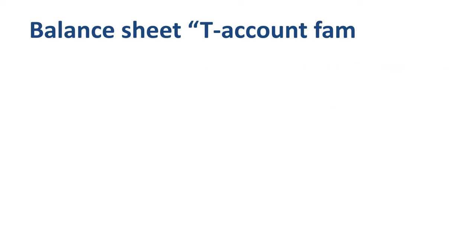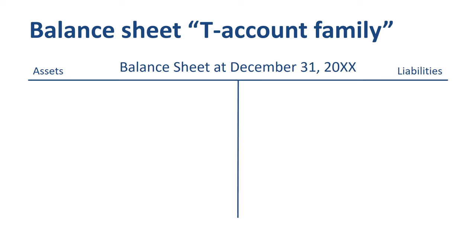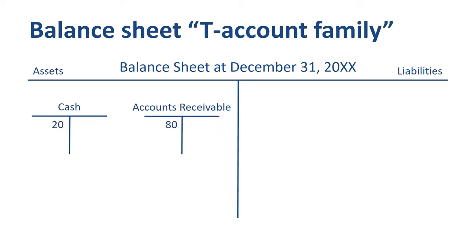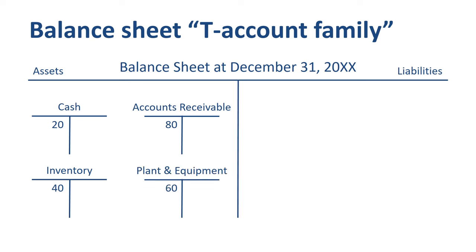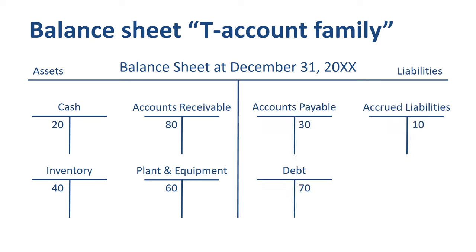A very useful way to view your balance sheet is to look at each of these asset and liability accounts as their own T-account. Cash, accounts receivable, inventory, and plant and equipment have a number on the left hand side of the T, as they are asset accounts. Accounts payable, accrued liabilities, debt, and equity have a number on the right hand side of the T, as they are liability accounts.